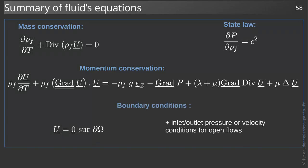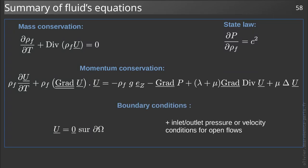We add to these equations boundary conditions, such as zero velocity on non-moving walls, or velocities or pressures imposed at the entrance and exit of open flows. This set of equations is called the Navier-Stokes equations.